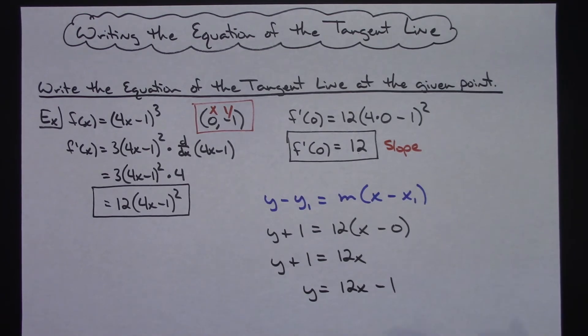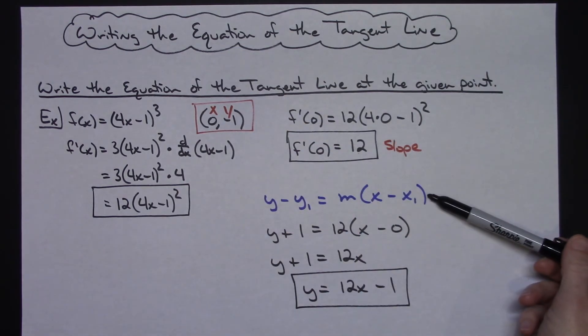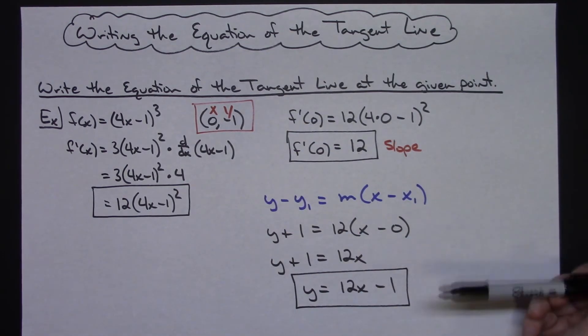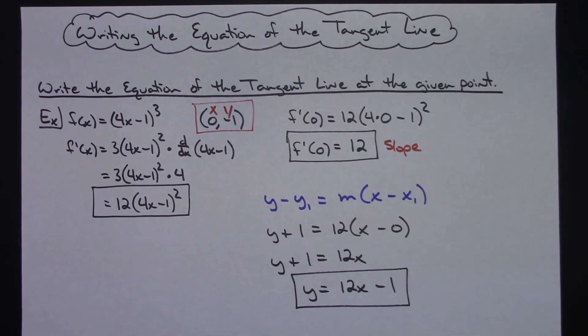So there is my equation in slope-intercept form of the tangent line at the given point. Had this been any other point other than something with a 0, I probably just would have left it there in point-slope form. But I don't really like leaving that 0 there so that's why I switched it.